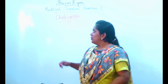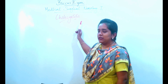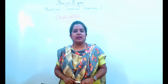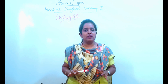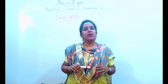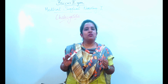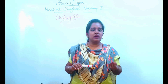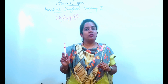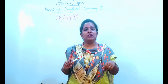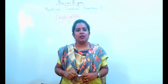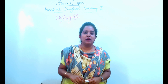Today our topic is cholecystitis. Here 'itis' refers to inflammation and 'cholecyst' means gallbladder, so cholecystitis is gallbladder inflammation. The gallbladder is located just under the liver, on the upper right border of the body. The gallbladder is used to store the bile, which travels to the small intestine to help digest fatty foods.